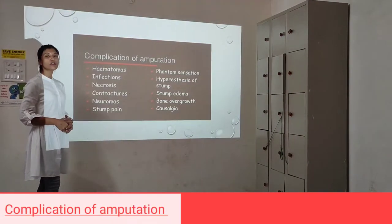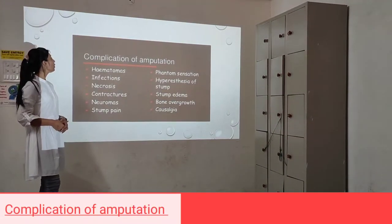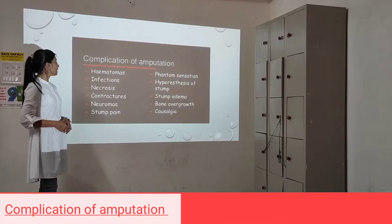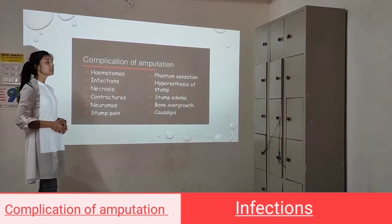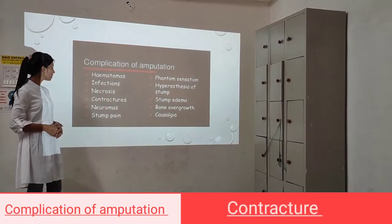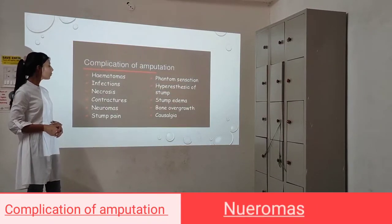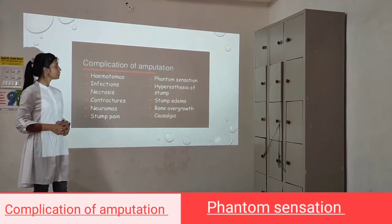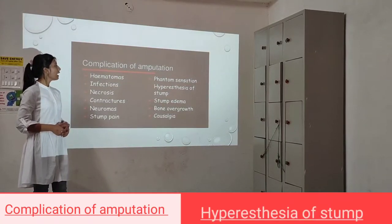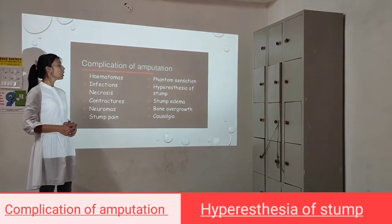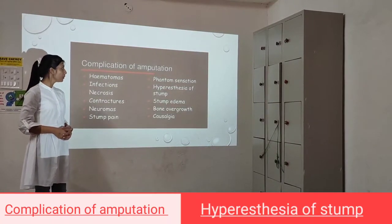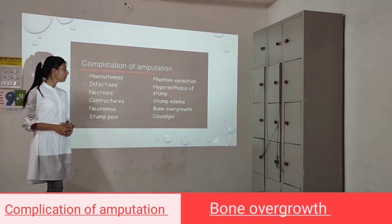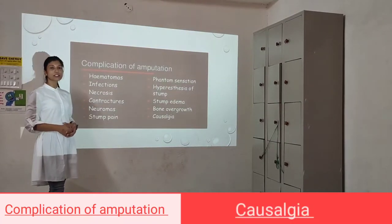Complications of amputations include: hematoma, infection, necrosis, contracture, neuroma, stump pain, phantom sensations, hyperesthesia of the stump, stump edema, bone overgrowth, and cosyngeia.